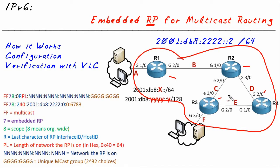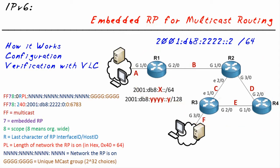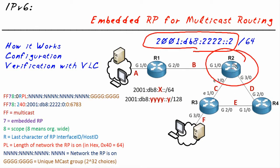One mechanism of doing that is by embedding the IP address of the rendezvous point inside of a multicast group address. To embed the rendezvous point IP address inside of a group address, we first need to plan what the rendezvous point address is going to be. We'll choose R2 and his loopback address to be the rendezvous point. We are going to statically configure R2 as the rendezvous point, but we're not going to specifically tell R1, R3, or R4 — we'll let them figure out who the rendezvous point is based on the multicast group address that we create.